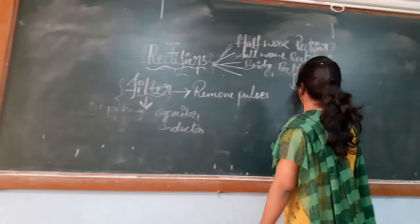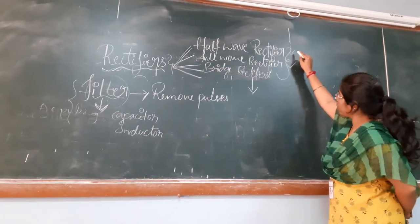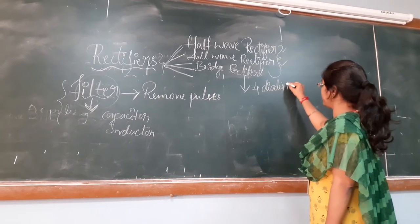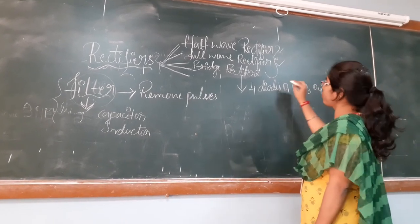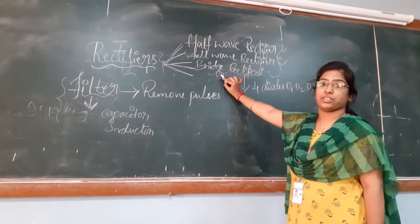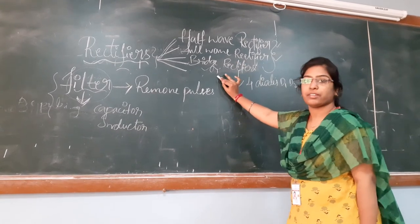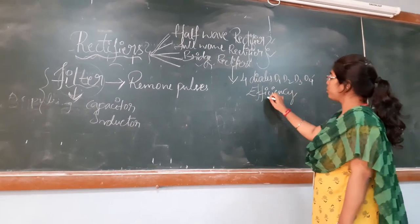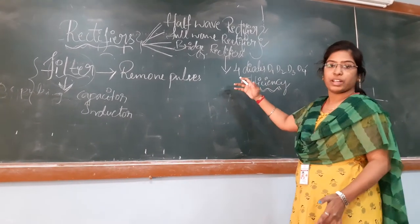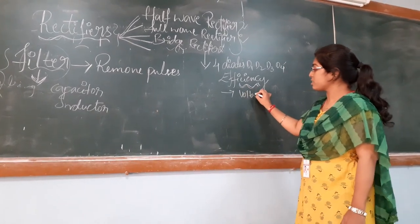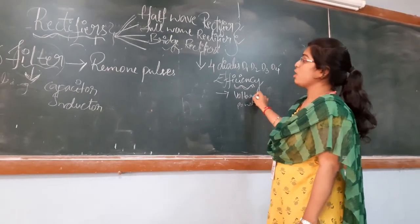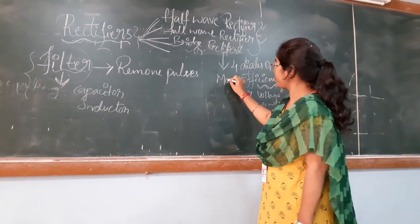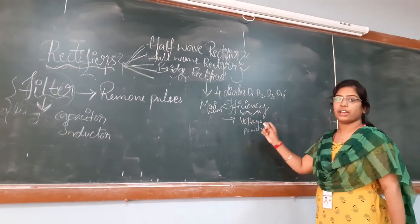Coming to the bridge rectifier: in the half wave rectifier we use only one diode, in the full wave we use two diodes, and in the bridge rectifier we use four diodes — D1, D2, D3, and D4. The bridge rectifier is used in many applications compared to half wave and full wave, because of its efficiency. Efficiency refers to the capacity of the rectifier — how much voltage and power it delivers. The bridge rectifier gives the maximum efficiency, so it is used in many power supply applications. This concludes the topic of rectifiers. Thank you.